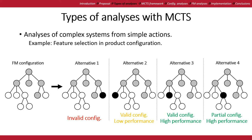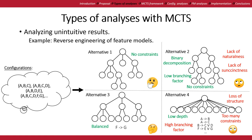There are other problems where the current solution is not the only possible solution. For example, multiple feature models can be extracted from a given set of configurations, each with different properties that fulfill our requirements differently. In this case, Monte Carlo Tree Search can help us analyze non-intuitive decisions that can go unnoticed when only considering the final result.